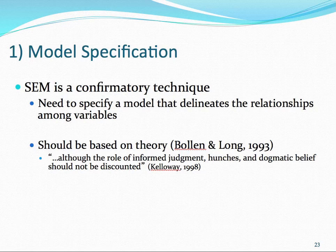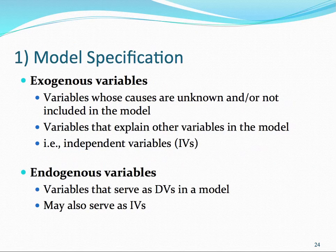When we specify our model, we have two types of variables. The first are exogenous variables—variables whose causes are unknown or not included in our model. In our latent variable path analysis example, role ambiguity and aggression would be examples of exogenous variables. These are variables that explain other variables in our model—they are considered our independent variables.